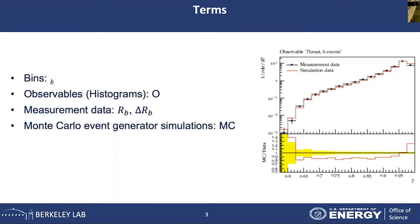The Atlas data gives us some measurement data values as well as the uncertainty associated with each value, denoted using R_b and delta R_b. These values are shown by the black line in the upper plot. Physicists use Monte Carlo event generator simulations to describe those experiment data, denoted by the red line.